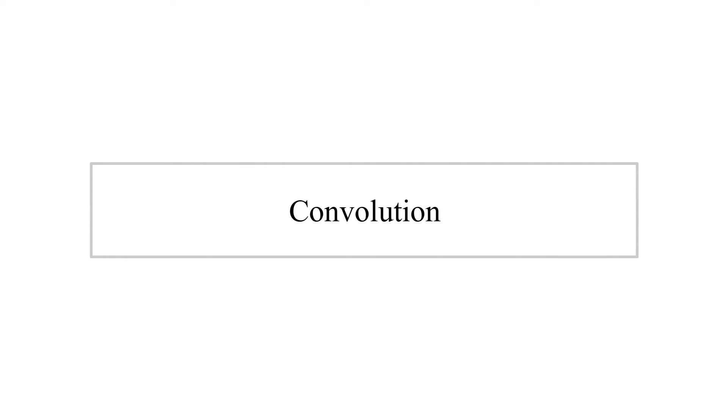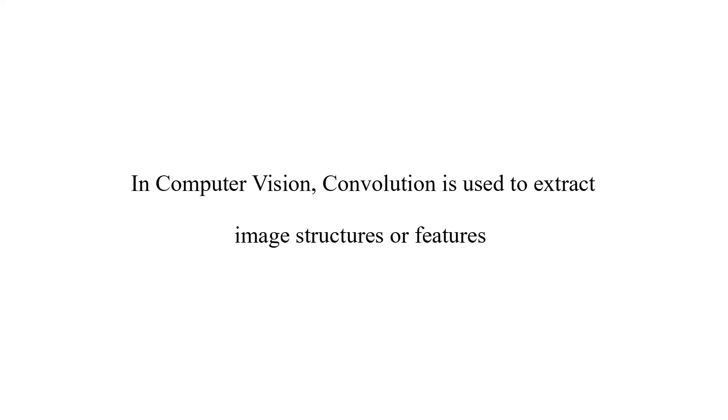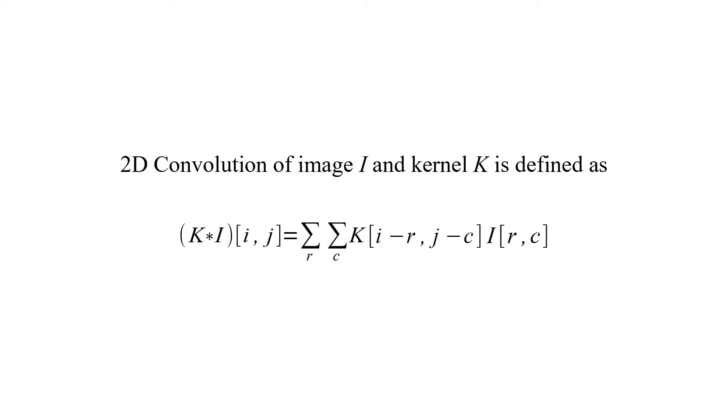Convolution. In computer vision convolution is used to extract image structures or features. 2D convolution of image I and kernel K is defined with this equation.